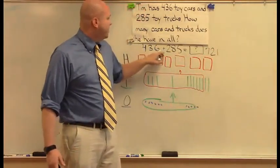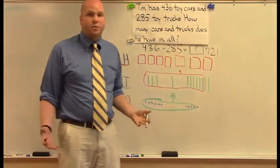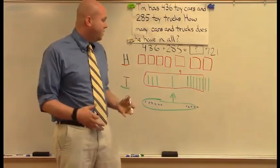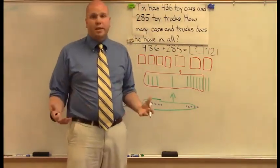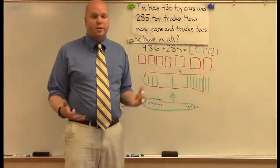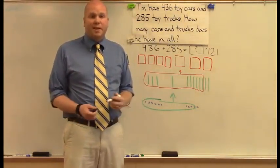So, four hundred thirty-six plus two hundred eighty-five equals seven hundred twenty-one. That's a really nice, clear picture representation that the kids can use. It's easier for the teachers to understand. They can help you out, too. Thank you very much.